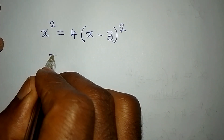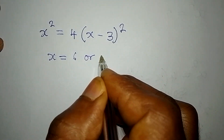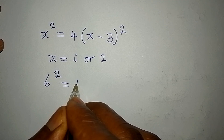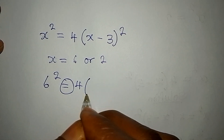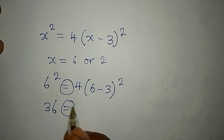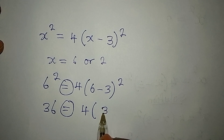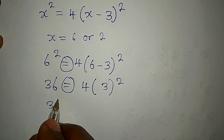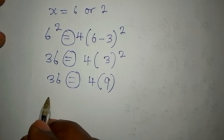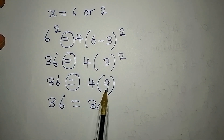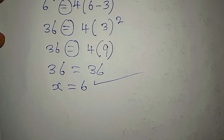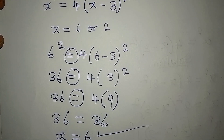This is the original equation and x equals 6 or 2. Let's work with x equals 6 first. Substituting: 6 squared equals 4 into bracket 6 minus 3, squared. That gives 36 equals 4 into bracket 3 squared, which is 9. So 36 equals 4 times 9, which is 36. This confirms x equals 6 is correct.